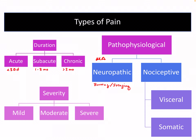Nociceptive pain is the throbbing or stabbing pain that we usually think of, and it can be divided into two groups: visceral, meaning it's an organ, or somatic, meaning muscle, bones, or joints. When we talk about severity, mild pain is usually a pain score of one to three, moderate pain four to six, and severe pain seven to ten.